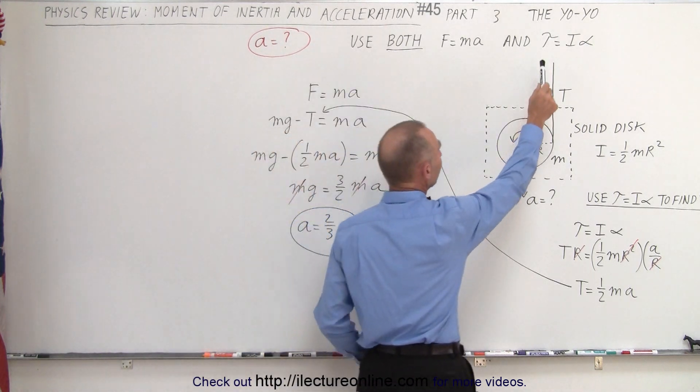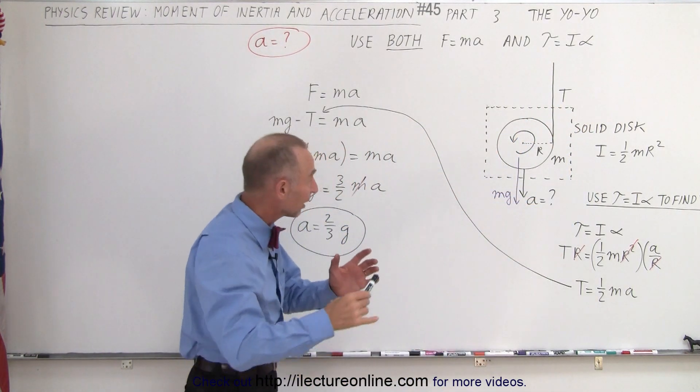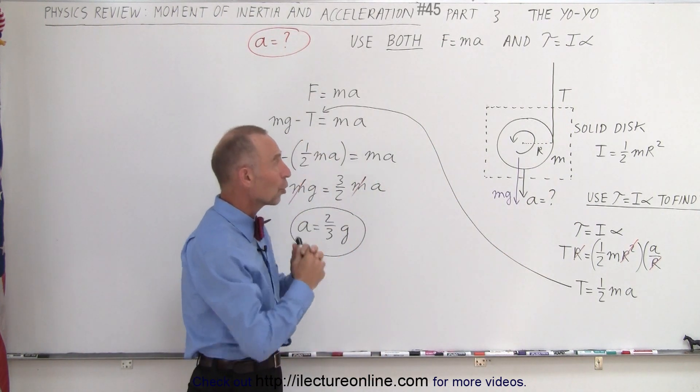You're going to use both the equation F equals MA and torque equals I alpha. Essentially, you use this equation first to find the tension in the system. Once you find the tension, you use F equals MA to find the acceleration. Case in point, the yo-yo.